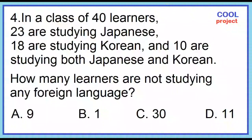Number 4. In a class of 40 learners, 23 are studying Japanese, 18 are studying Korean, and 10 are studying both Japanese and Korean. How many learners are not studying any foreign language?